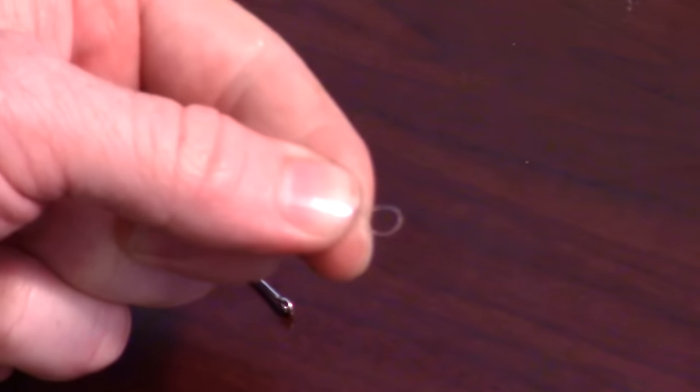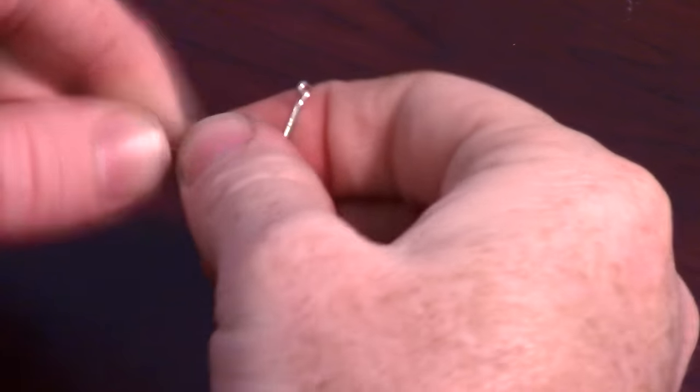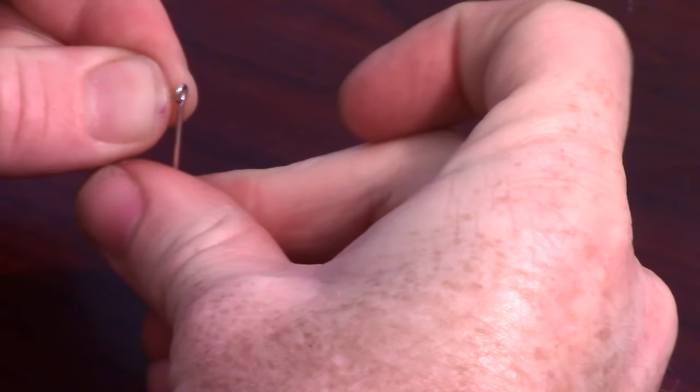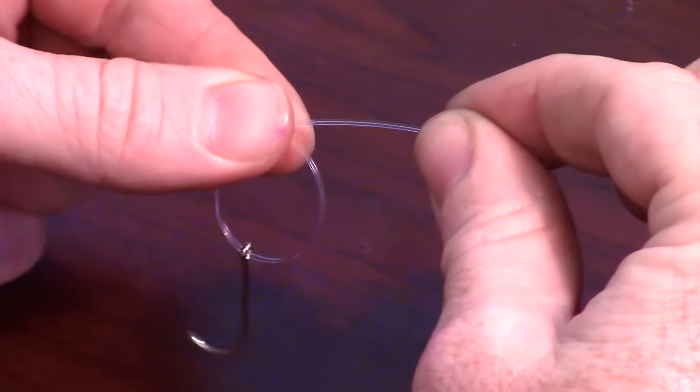Double up the line. Stick it through the eye of the hook. Make a loop and put the tag end through the loop.